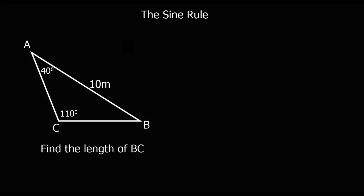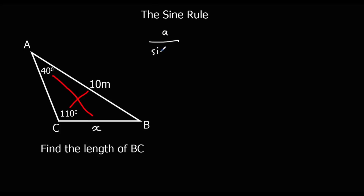Let's have a look at an example. The question says find the length of BC, so that's this one here — we'll call it x. To check we can use the sine rule, we see if we've got opposites. This one's opposite this one, and this one is opposite this one, so we can use the sine rule. We want to work out a length, so we're going to use the formula for lengths: a over sine A equals b over sine B.